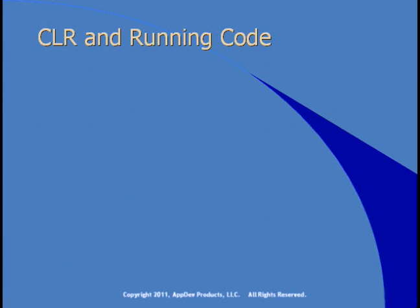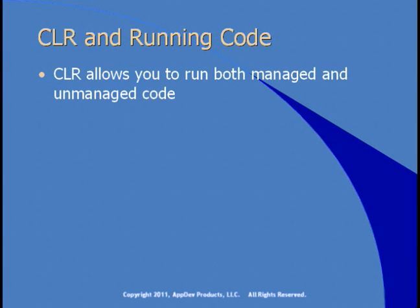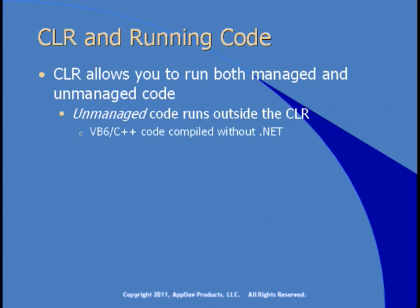The CLR allows you to run both managed and unmanaged code. Unmanaged code is code that runs outside the Common Language Runtime — code written before the .NET runtime, like VB6 or native C++ code compiled without .NET. Although the CLR doesn't load these things directly, applications can cause them to be loaded and they'll still work with the CLR running at the same time.